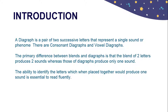A digraph is a pair of two successive letters that represent a single sound or phoneme. There are consonant digraphs and vowel digraphs. The primary difference between blends and digraphs is that a blend of two letters produces two sounds, whereas a digraph produces only one sound. The ability to identify letters which, when placed together, produce one sound is essential to reading fluently.